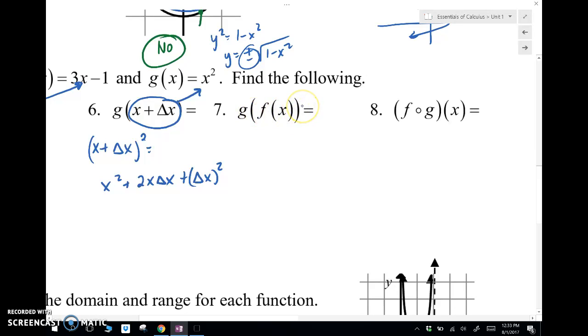g of f of x, this is a composite function. It means put in f of x wherever g was. So I'm sorry, for every x in our g function. So that f of x was 3x minus 1. So that's equal to 3x minus 1 squared. I'm going to take this entire thing and put it in here for x.